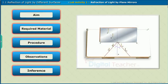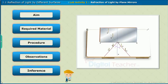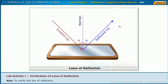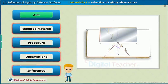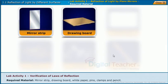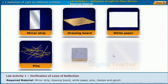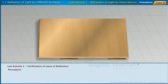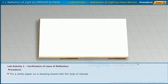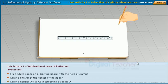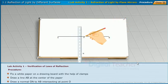Let us perform a lab activity to know about the reflection of light by plane mirrors. The aim of the lab activity is to verify the law of reflection. The required materials for this activity are a mirror strip, drawing board, white paper, pins, clamps and pencil. The procedure involves the following steps: fix a white paper on a drawing board with the help of clamps, draw a line AB at the center of the paper, and draw a normal ON to AB intersecting at point O.